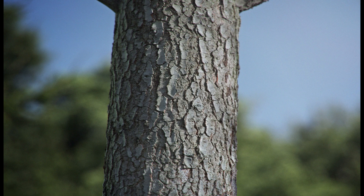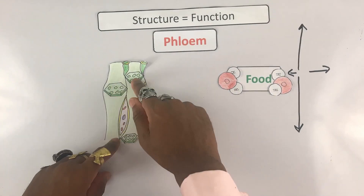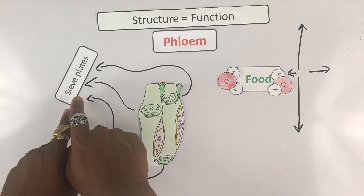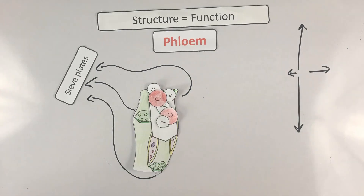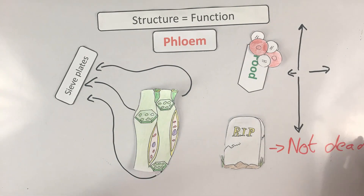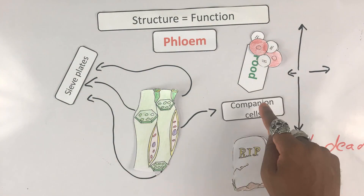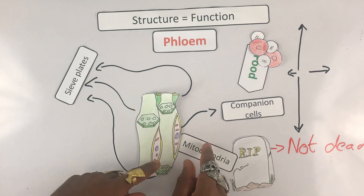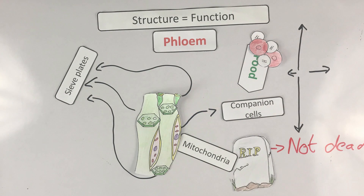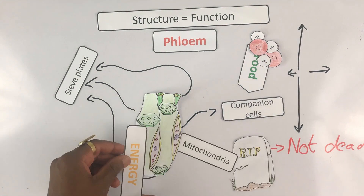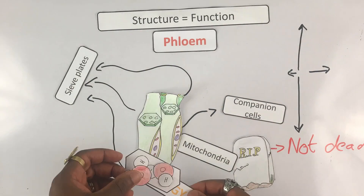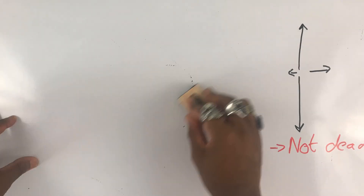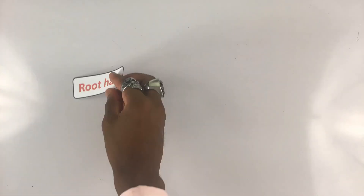The first striking adaptation are these sieve plates — essentially the cell wall but with holes in them. This helps to direct the dissolved food to where it's needed. Unlike xylem, the phloem cells are not dead, but they are heavily modified. Therefore, to stay alive they have a special type of life support called companion cells. These companion cells have a lot of mitochondria inside them, and they share energy with the phloem so it can be used to move dissolved food up and down the phloem vessels via active transport.